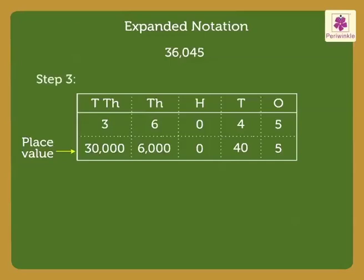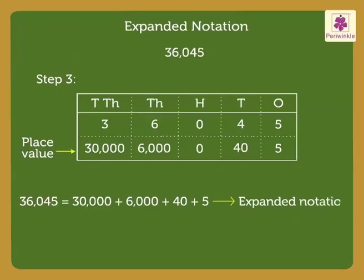Step 3. Write 36,045 as the sum of the place value of its digits. That is, 36,045 is equal to 30,000 plus 6,000 plus 40 plus 5, which is the expanded notation. As there is 0 in the hundreds place, we do not include it in the expanded notation.